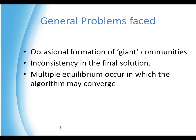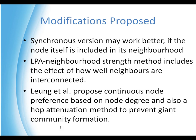The general problems faced by this algorithm are: sometimes one label spreads too much, forming a very large community — smaller communities combine together into a giant community, or sometimes just one community covers the entire graph. The solution is very inconsistent: if you run it multiple times you may get multiple different results. This is because multiple equilibria occur in which the algorithm may converge.